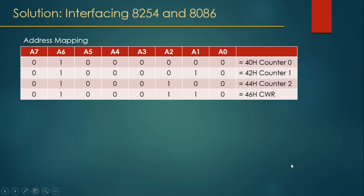For the address mapping, the given base address is 0040H for counter 0. Since we connect only the even address bank: 0042H is for counter 1, 0044H is for counter 2, and 0046H is for the control word register.